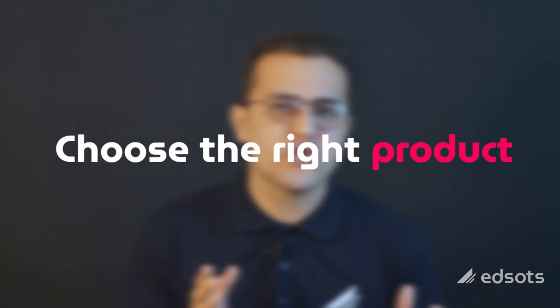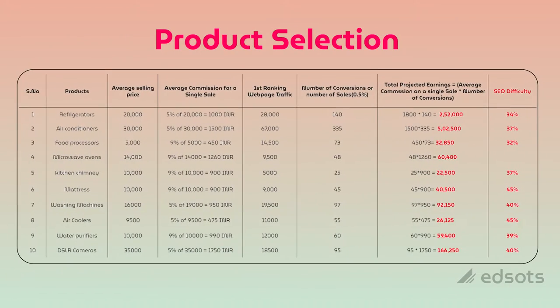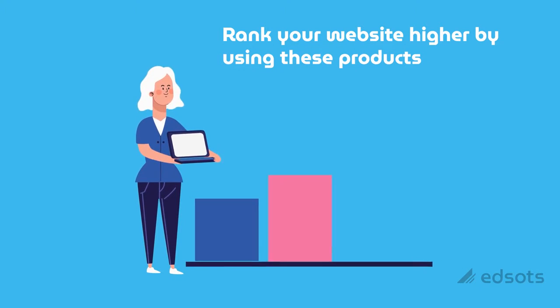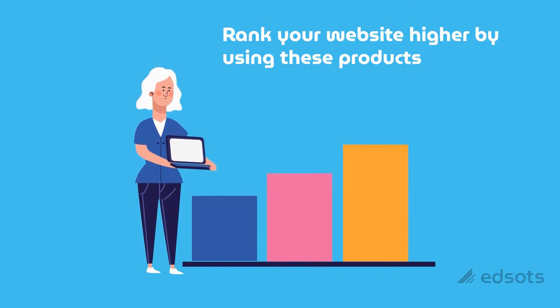In the last lecture, we studied the step-by-step process we need to follow while choosing the right product to promote. And to make this process easy for you, I have shortlisted the top 10 products. You can choose any product from this list. I have already checked all the metrics, and after that I can say that if you choose any product from this list, within a few months you can rank on the first page of search results.